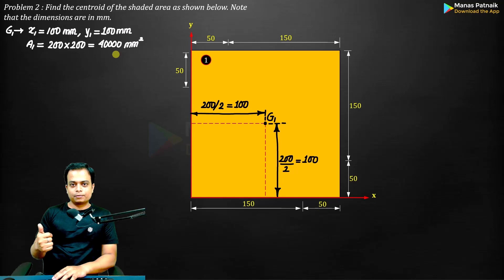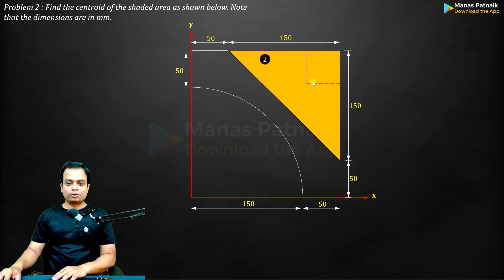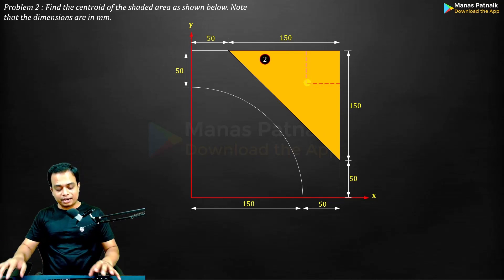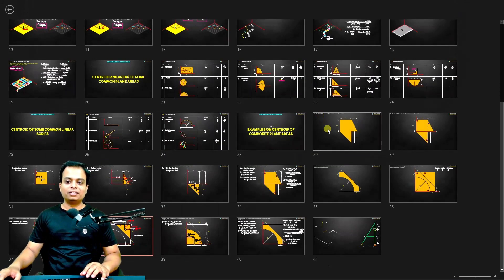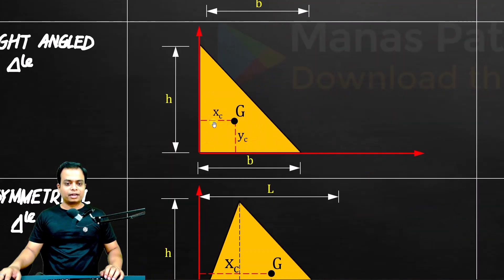Here we go. Now, we know that the centroid of a right angle triangle is b/3, h/3 from the right angle. I would love to recall this. Take a look. This is something we have already discussed, and this over here is a right angle triangle. So with respect to this corner, b/3, h/3.